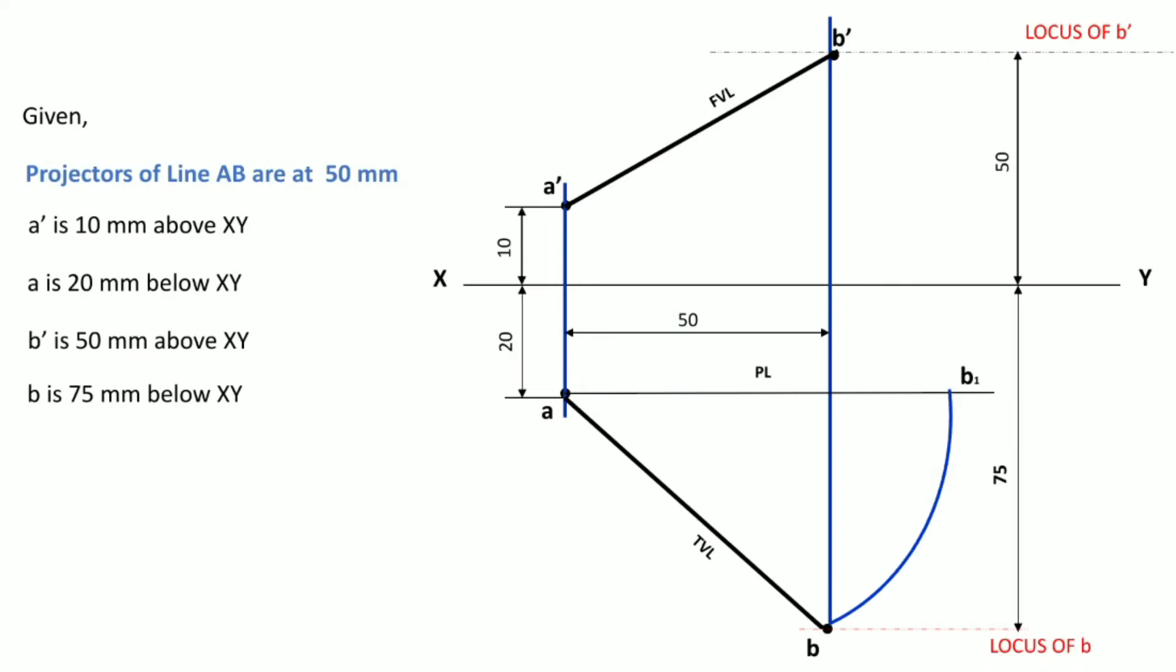If you project this point B1 vertically upwards in front view till the locus of point B dash, you get directly point B1 dash. And if you join this B1 dash with the point A dash, you get the true length in front view. Now you can measure the angle of true length in front view. That angle would be angle theta.